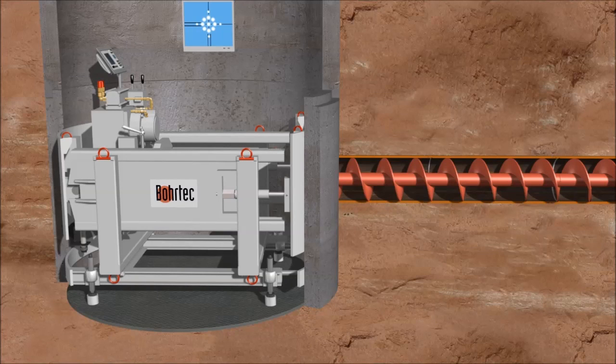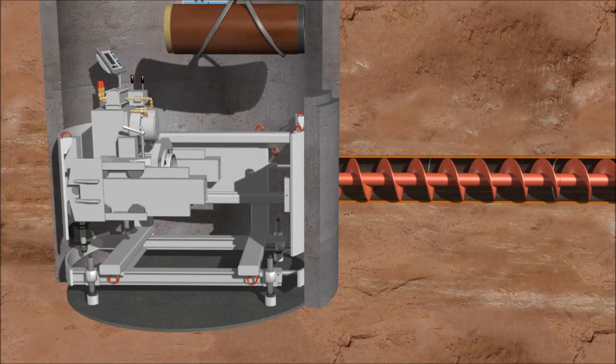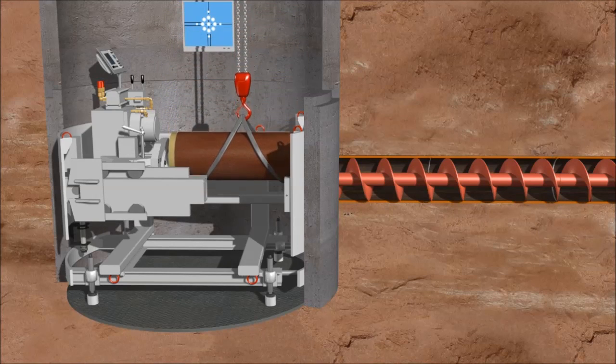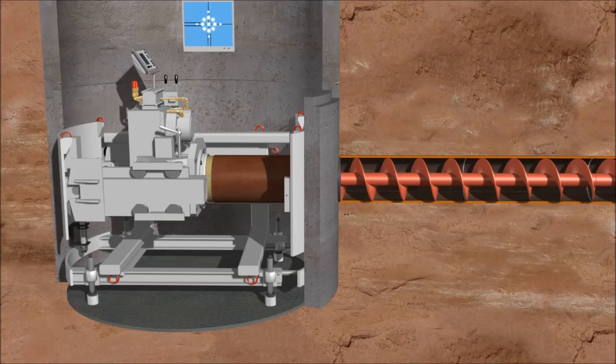If product pipes to be installed have the same outer diameter as the casings, then the first product pipe is coupled to the casings in the launch shaft and jacked into place in the second step of the operation, like the clay pipes in this example.